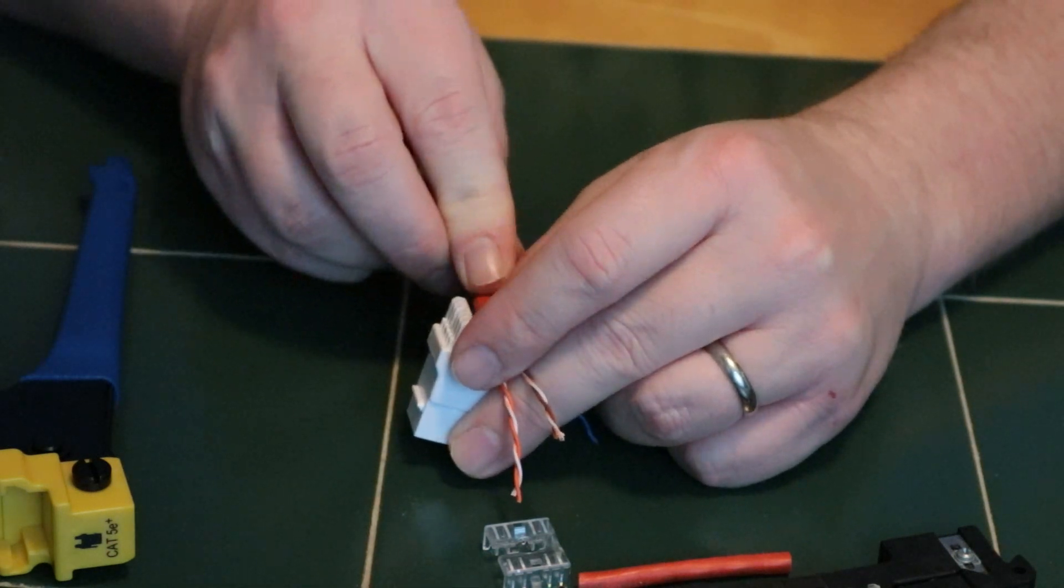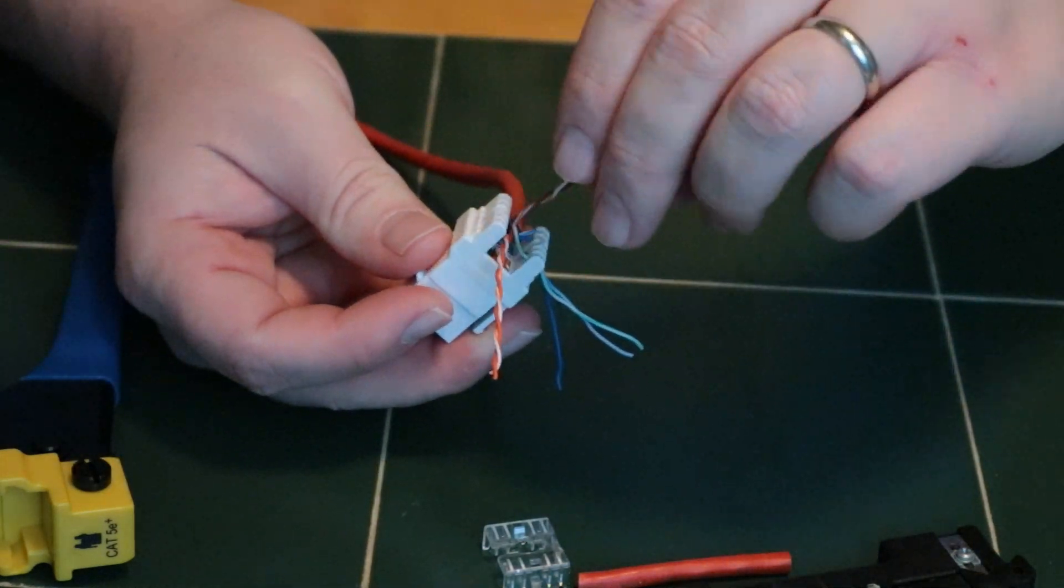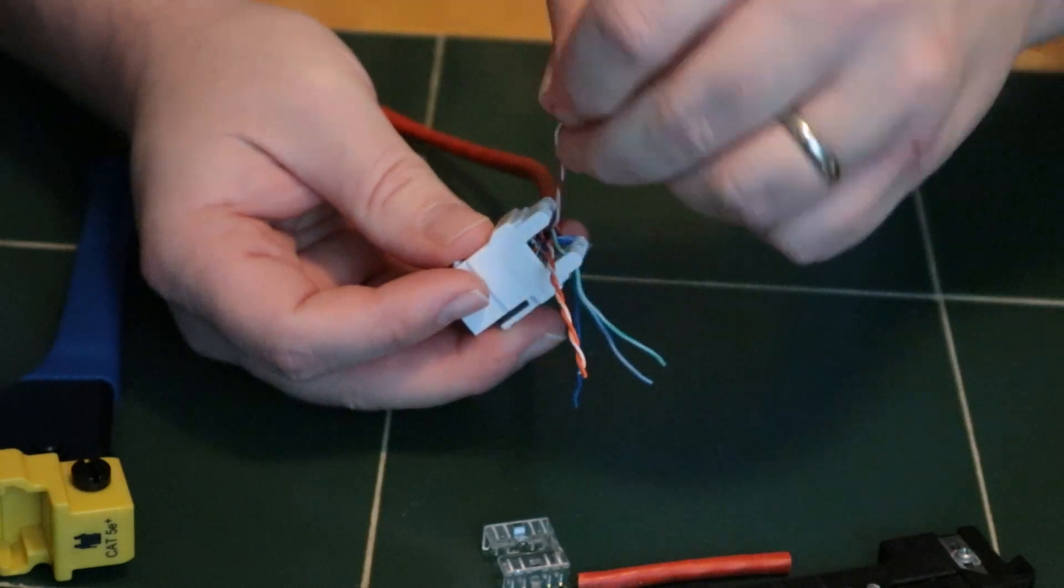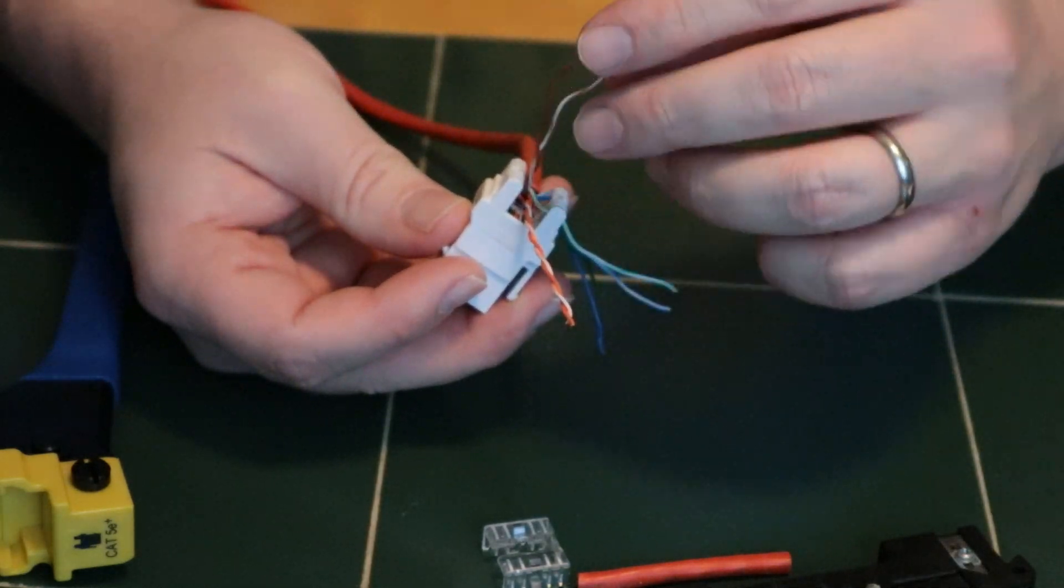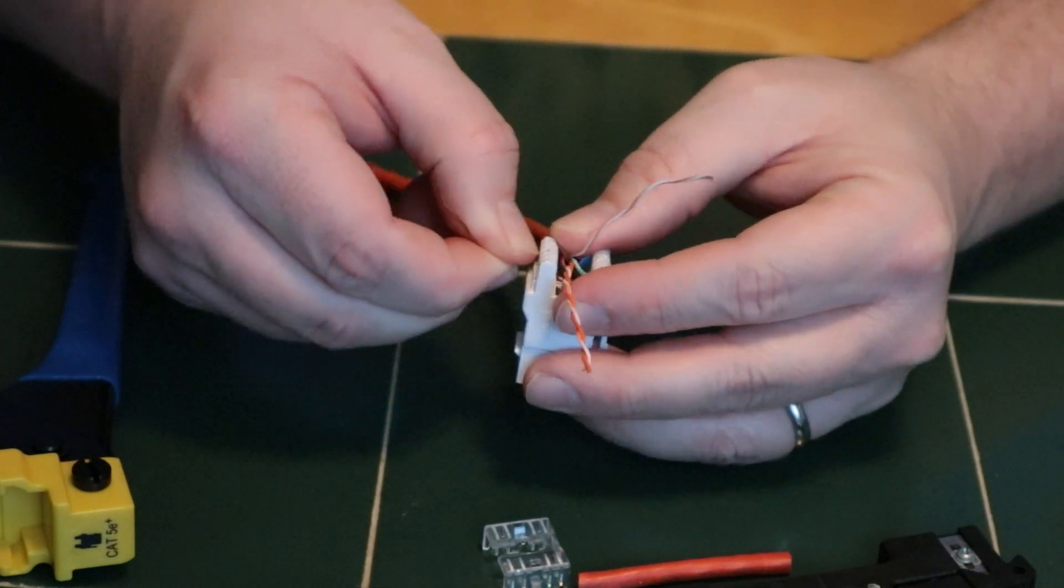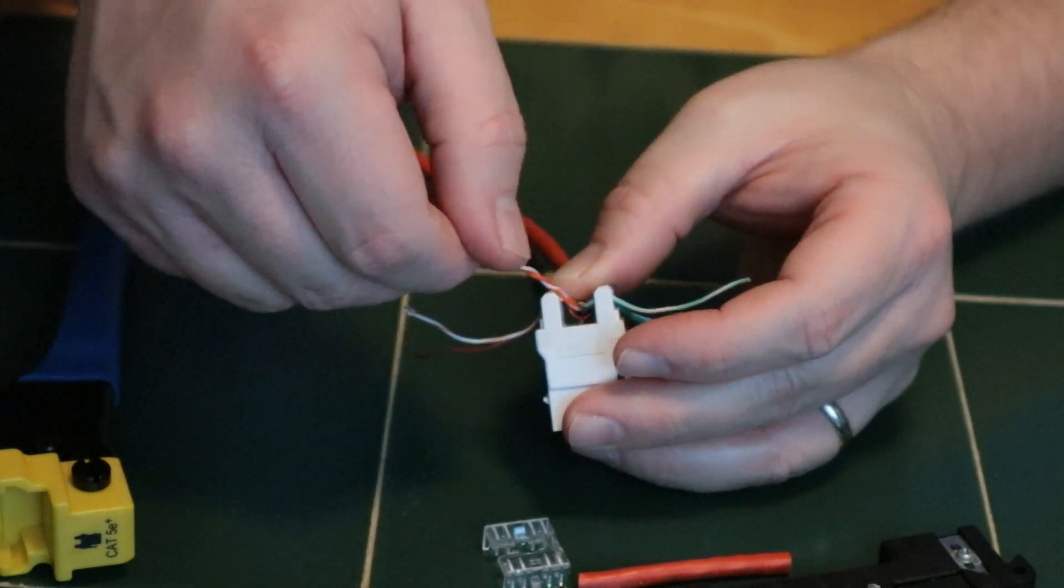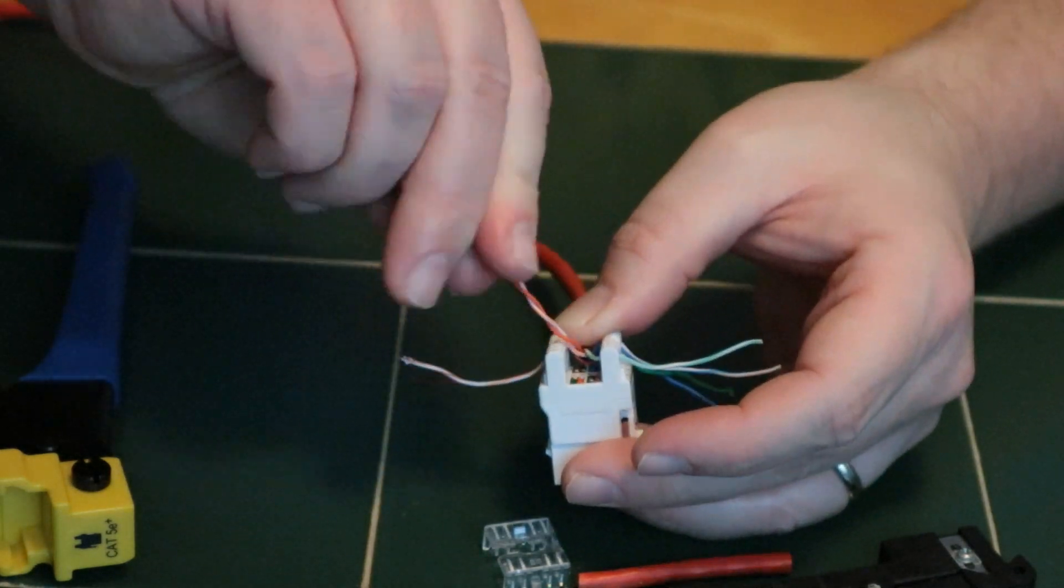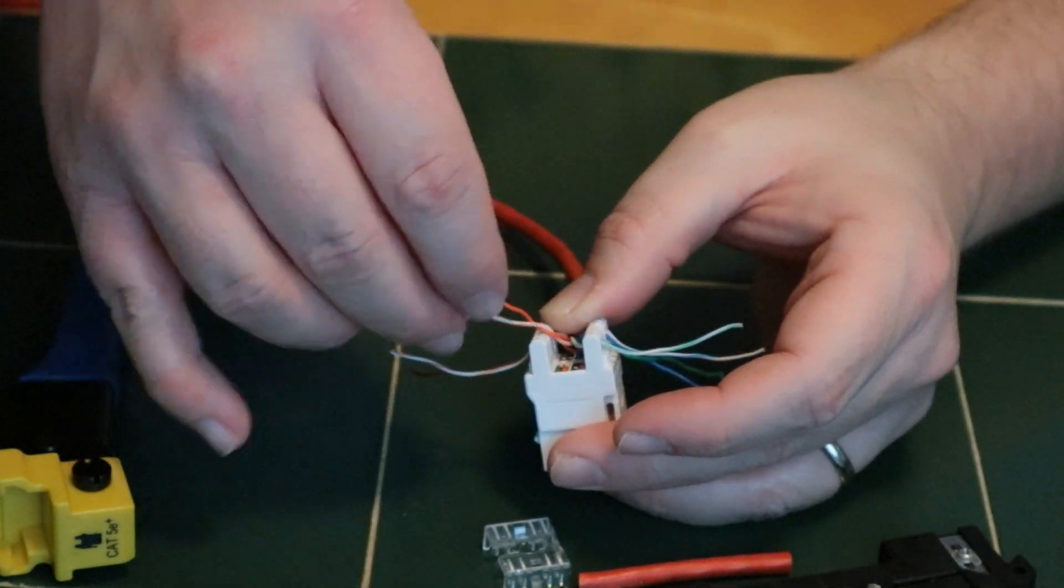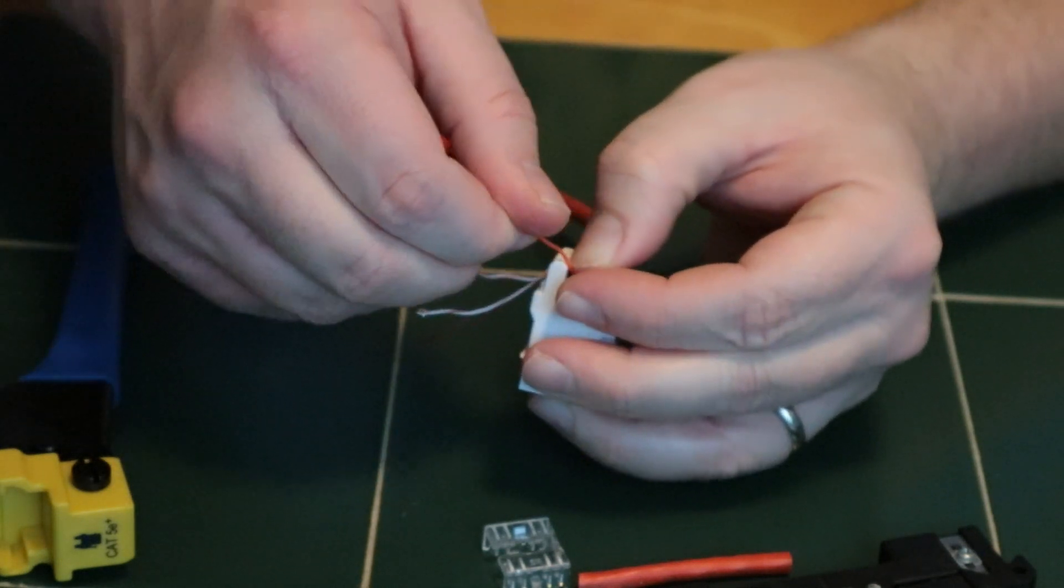Then we're going to come over to the other side and we are brown, white brown on this side. There's brown and then white brown. And then we are going to be white orange, orange.